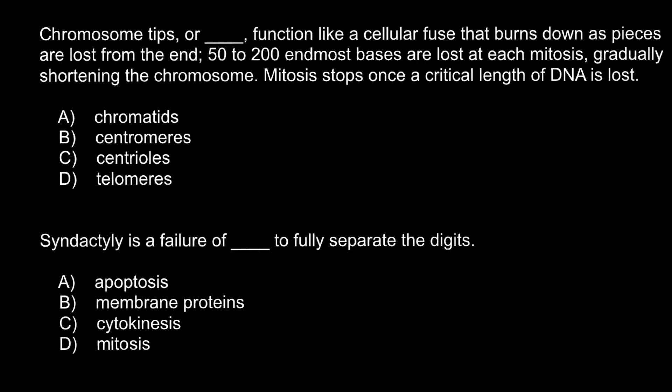Here is the first question. Chromosome tips, or blank space, function like a cellular fuse that burns down as pieces are lost from the end. 50 to 200 bases are lost at each mitosis, gradually shortening the chromosome. Mitosis stops once a critical length of DNA is lost.